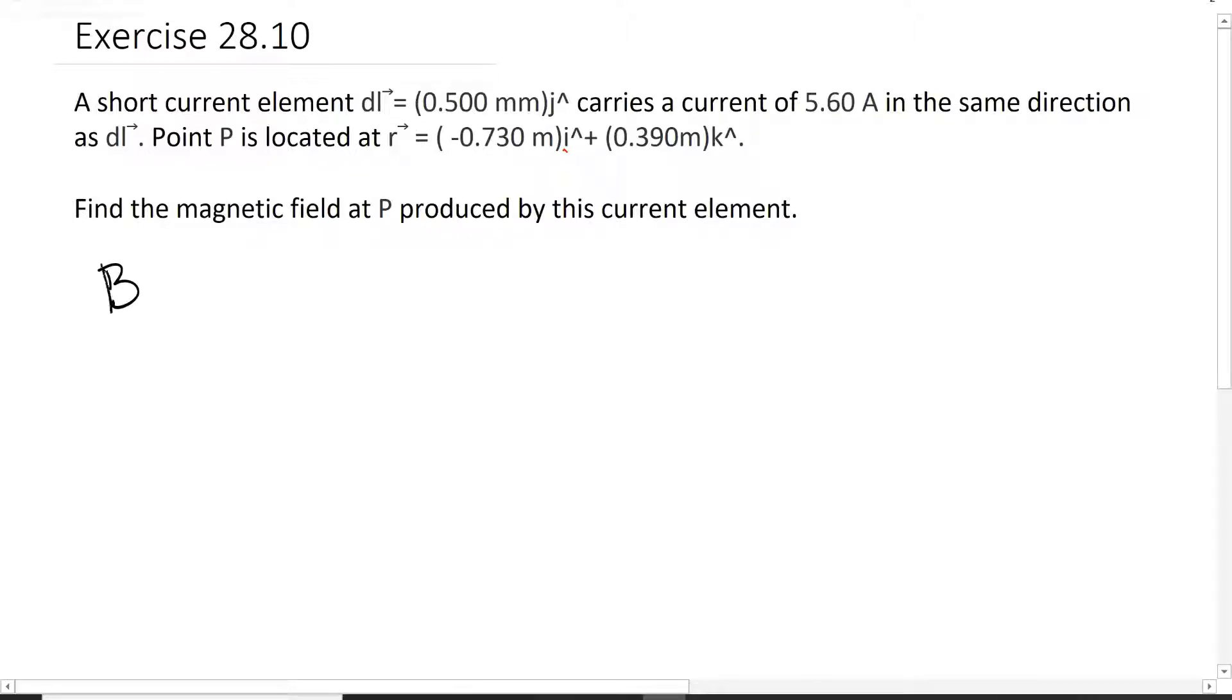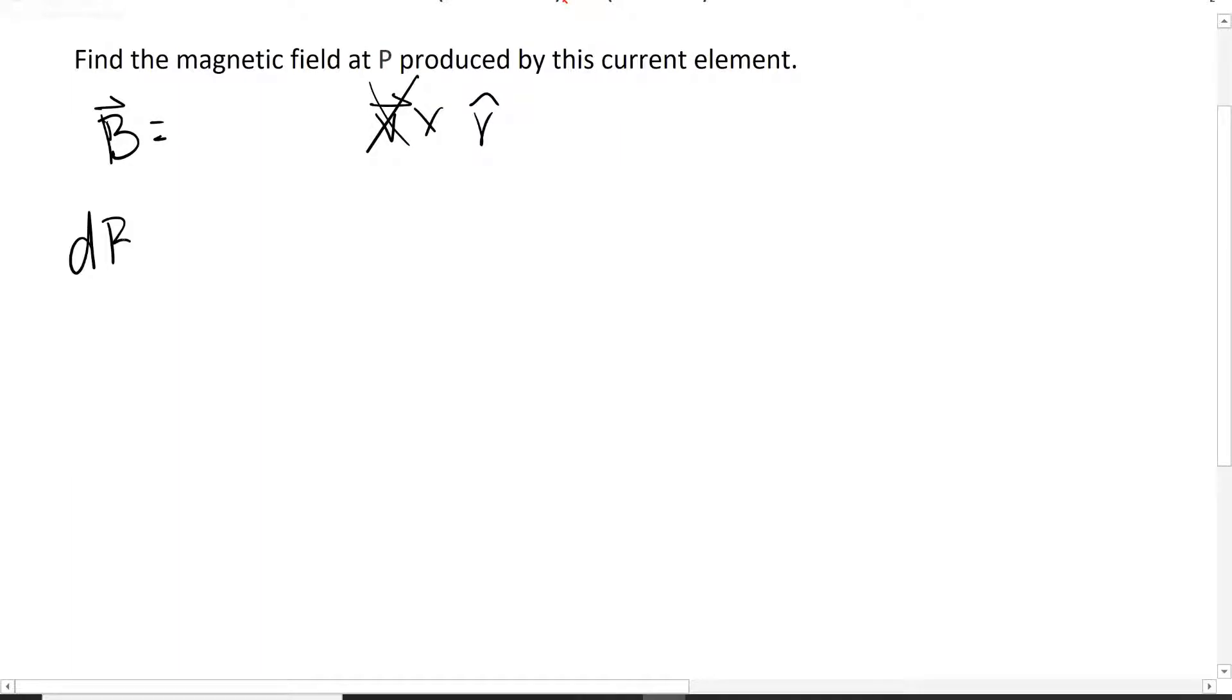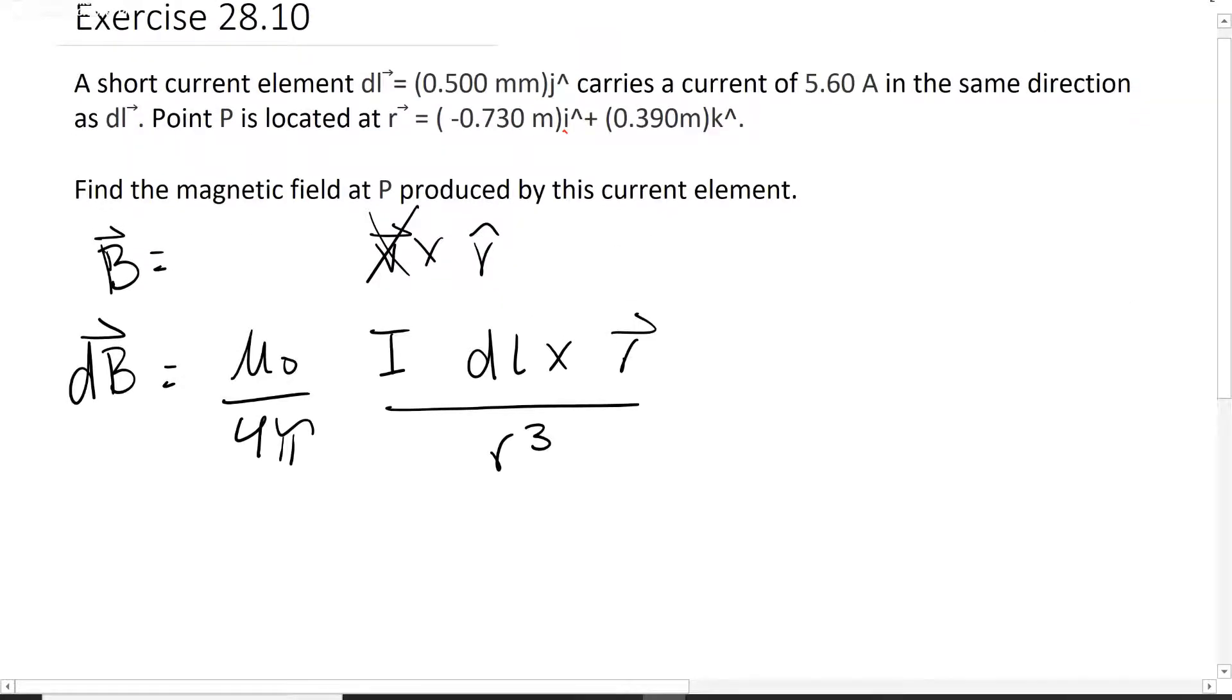Usually when we're doing magnetic field we use the B equation with velocity times position, but we don't have a velocity. What we can use is dB, which is mu naught over 4 pi times the current dl cross r over r cubed. The most important thing is that now we have current and dl, which is what we're given in this problem.